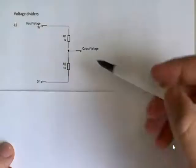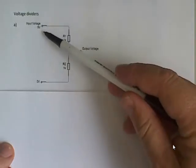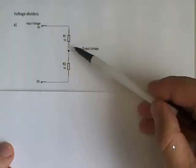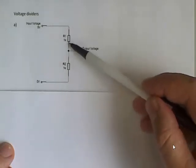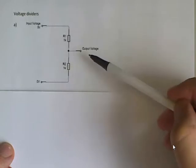If we have the given voltage of an input voltage of 9 volts, and this voltage divider here with two resistors made up of, each is a 1K resistor, and we need to calculate the output voltage.